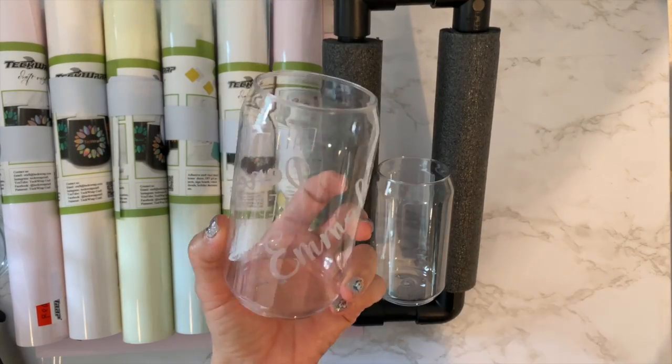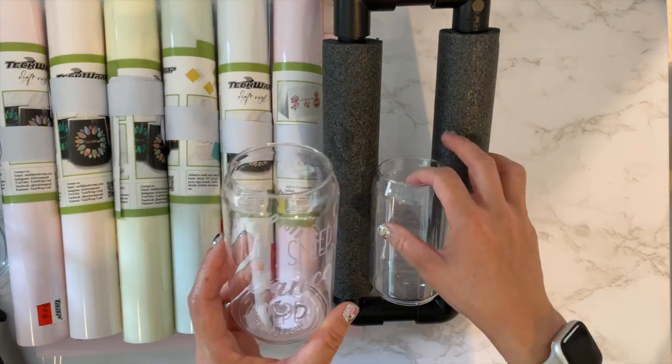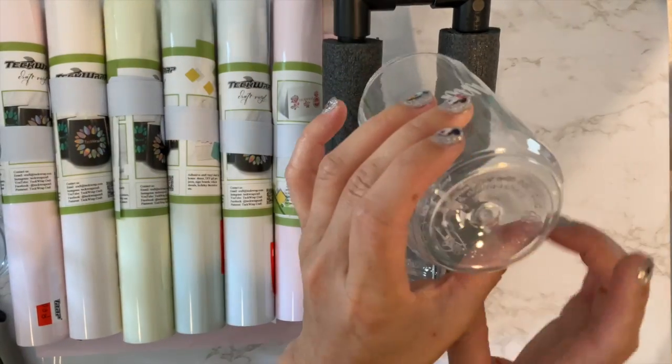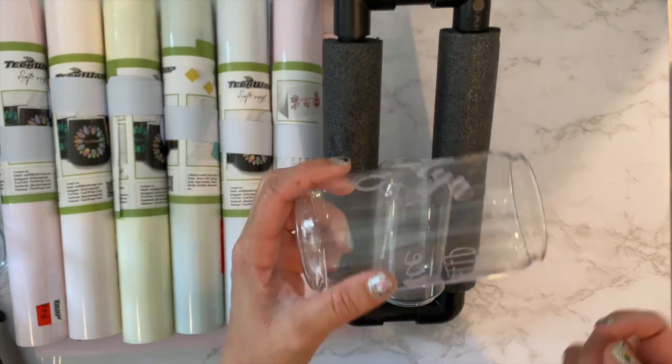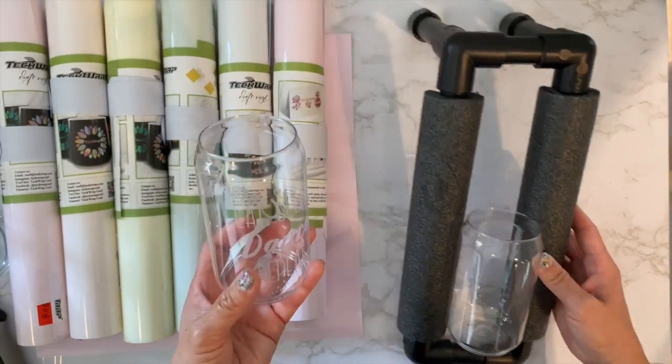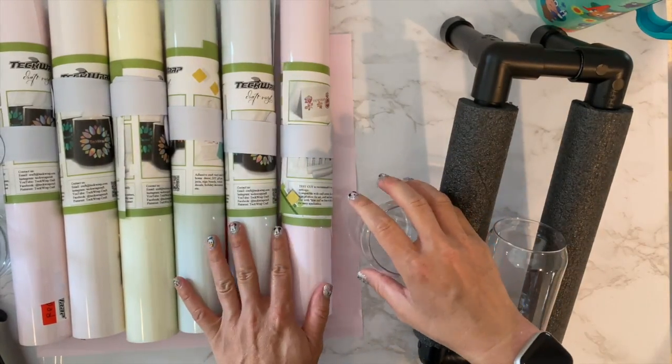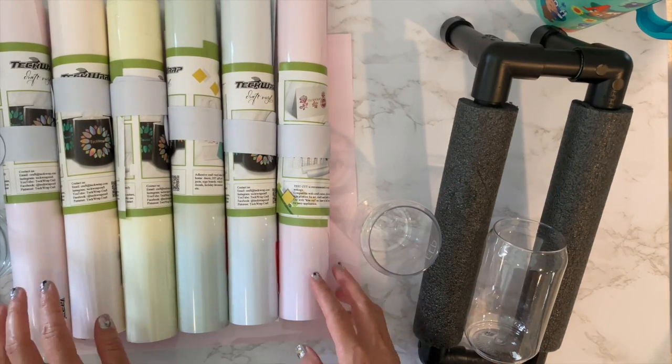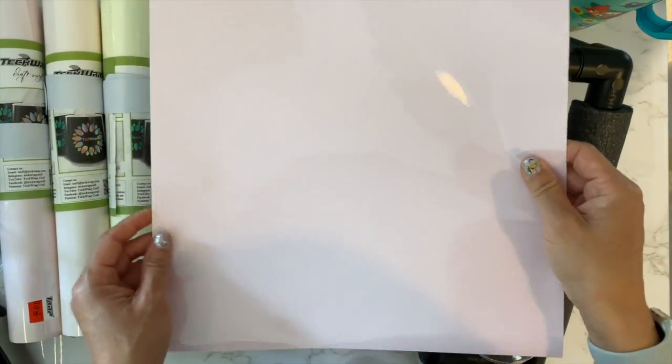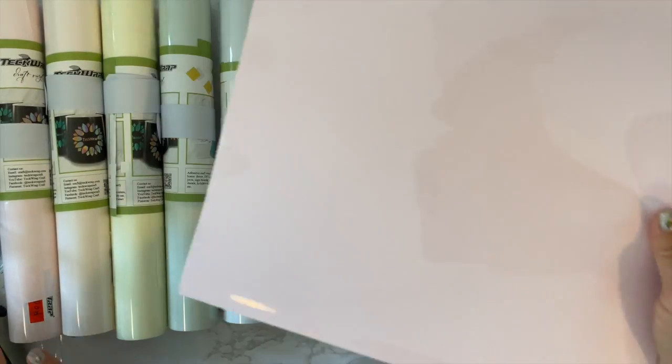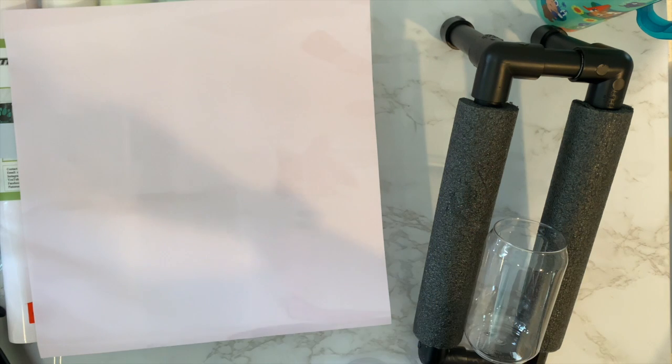They've lasted a long time, I still have them and I probably got them like two years ago. They hold up well, they are not for hot liquids or for the dishwasher but if you just use regular hand washing they last a really long time. This is made with the tech wrap cold color change vinyl, so I have six colors and I got one more, this is a pink one.